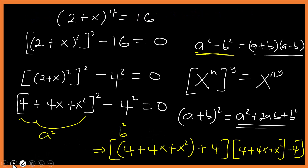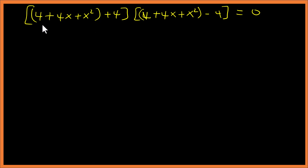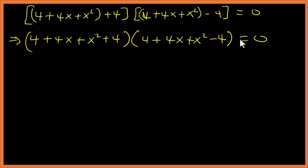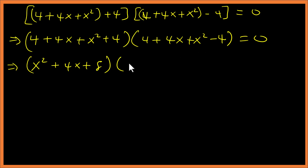So we can write this as (4 + 4x + x² + 4) times (4 + 4x + x² − 4) equals zero. Simplifying: the first bracket gives x² + 4x + 8, and the second bracket gives x² + 4x, since 4 minus 4 is zero.